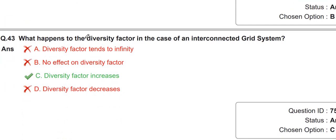What happens to the diversity factor? The diversity factor = sum of individual maximum demands / total connected load, and its value is always greater than one. When connected to an interconnected grid system, the loads increase, and therefore the diversity factor also increases because the sum of connected loads becomes more.